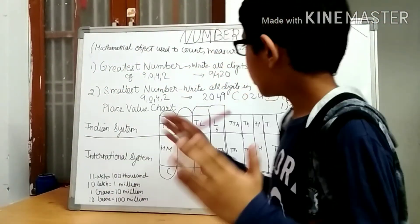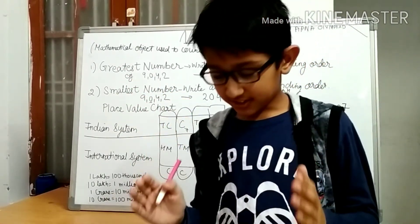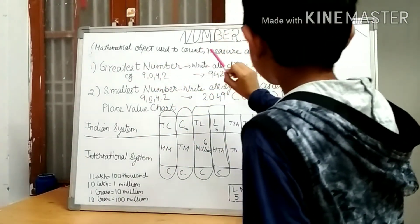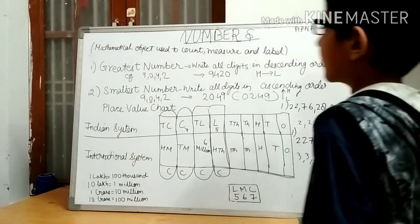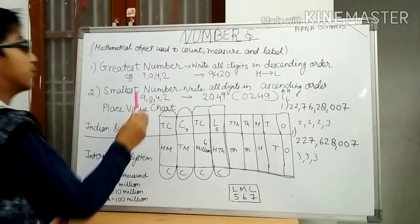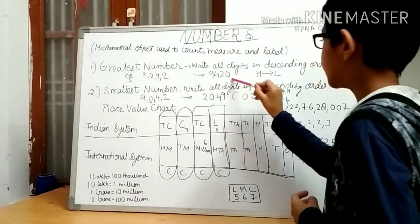Today we will study how to write greatest number and smallest number by given set of numbers. Greatest numbers: we have to write all digits in descending order. Example: 9042 equals 9420.